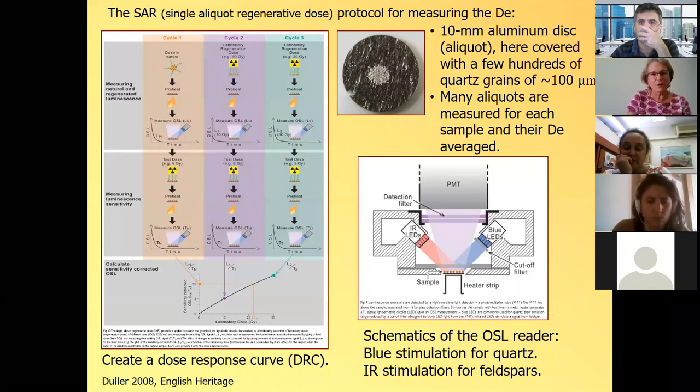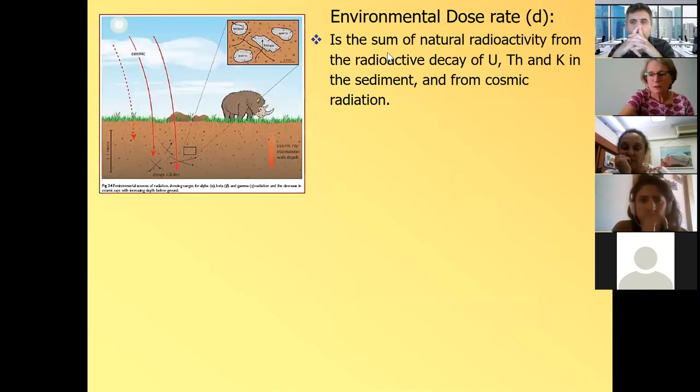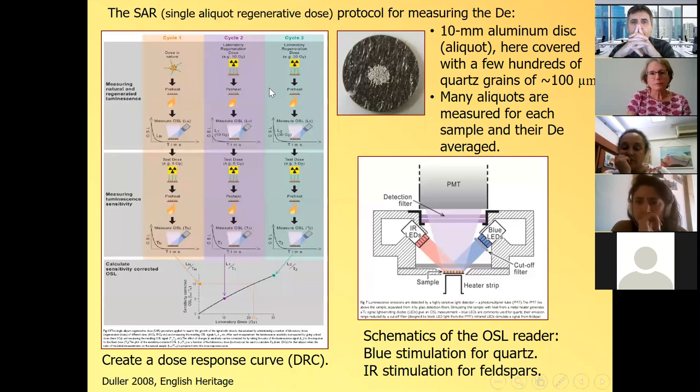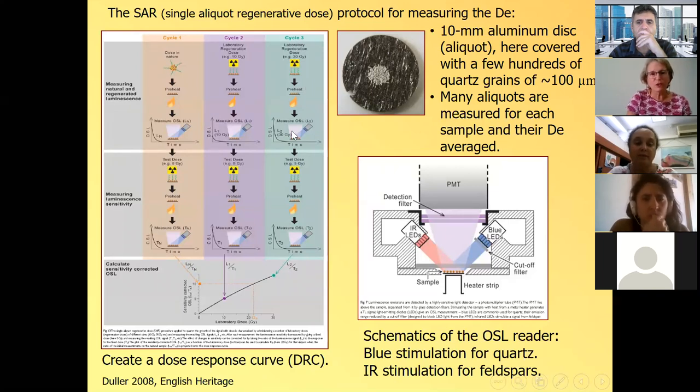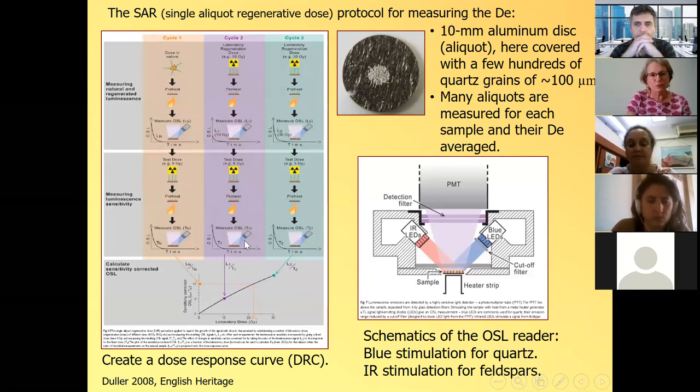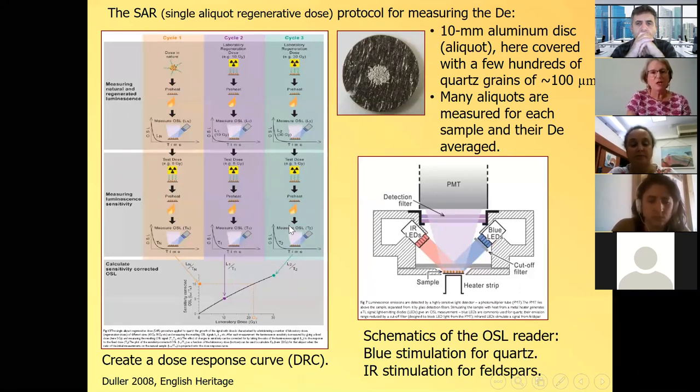So now we have the natural signal, which is normalized. Then we give it a beta dose. In this case, it's 10 gray. And again, we preheat it, and we measure the signal, and we do the same kind of normalization that we did here. And then we give it another dose. In this case, 30 gray. We preheat and we measure. So here is another signal, and we normalize it. So we take the ratios of these two signals.